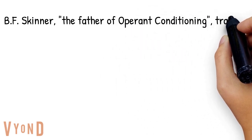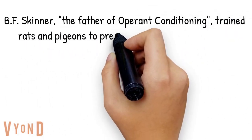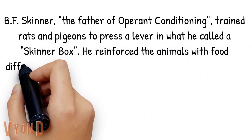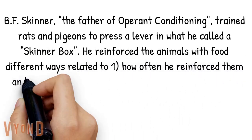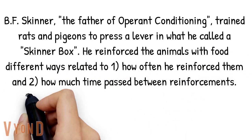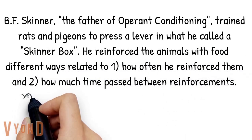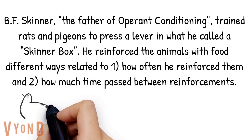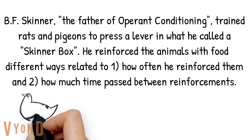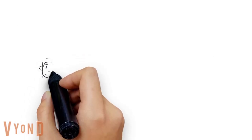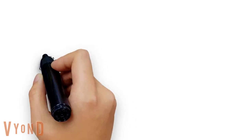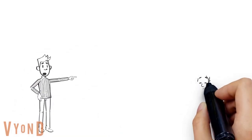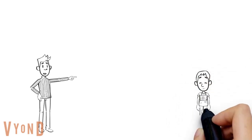Skinner, the father of operant conditioning, trained rats and pigeons to press a lever in what he called a Skinner box. He reinforced the animals with food in different ways related to how often he reinforced them and how much time passed between reinforcements. To illustrate the schedules of reinforcement, I'm going to use an example of Brian and his son Steven.